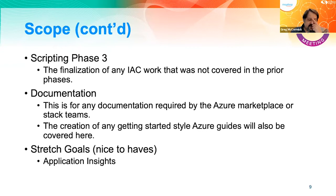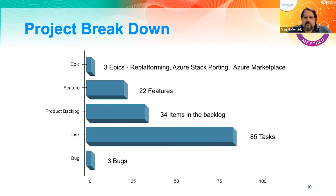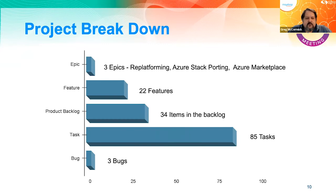Stretch goals include making it work with Application Insights. The team has been working on that and getting good metrics and tracking. For the project breakdown, we have three epics: re-platforming (largely done), Azure Stack porting, and Azure Marketplace. Out of that, 22 high-level features were created, with 34 items in the backlog and 85 tasks total. We only found three bugs within the system — there were plenty of things that needed refactoring, but really only three actual bugs.